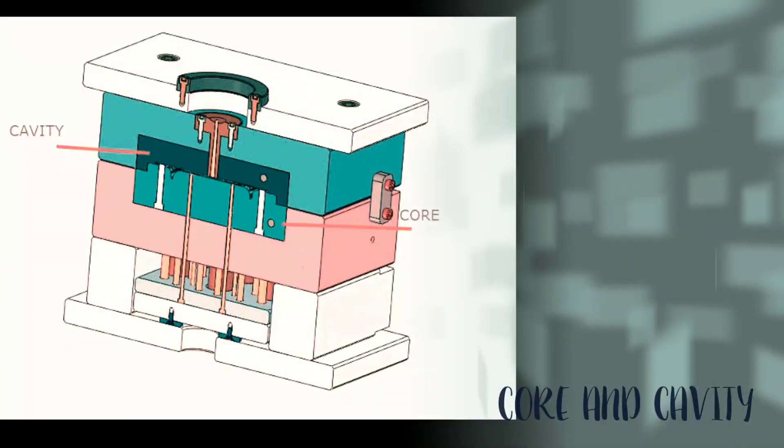As you see on the screen, that is our core and cavity. Core is an extended portion of mold which creates the internal plastic part surface. This means the core makes the internal surface of the plastic product. The core forms our plastic part's internal surface in the molding process. Let's go further and learn about cavity.